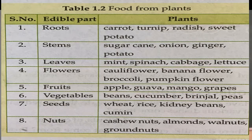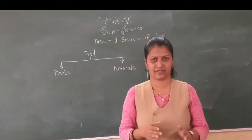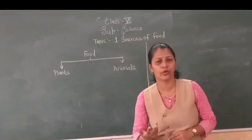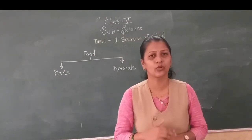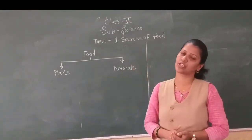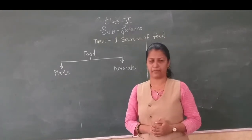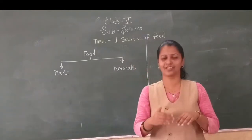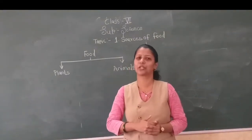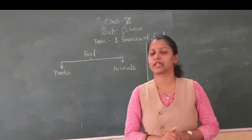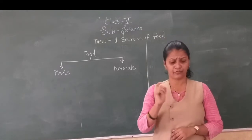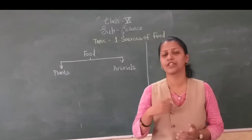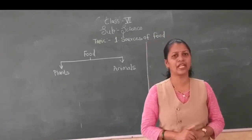Now, there are some plants where we can get two or more edible parts which can be eaten. For example, if we take the banana plant, from that banana plant we can get fruit as well as flower which can be eaten.